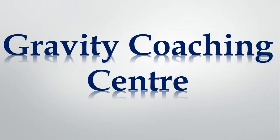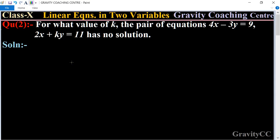Welcome to our channel, Gravity Coaching Center. Class 10, chapter Linear Equations in Two Variables, question number 2. For what value of k, the pair of equations 4x minus 3y equal to 9 and 2x plus ky equal to 11 has no solutions?